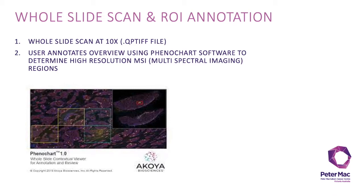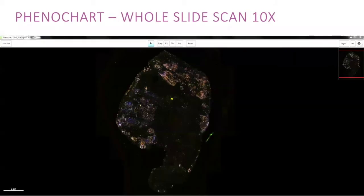The user then annotates the overview scan using PhenaChart to identify the regions for high-power multi-spectral imaging using the Vectra. PhenaChart is a freely available software that allows you to view and navigate around whole slide images and to select areas of interest for further review and multi-spectral imaging. The following slide shows a whole slide scan of a piece of human colorectal cancer stained with the T-cell panel.